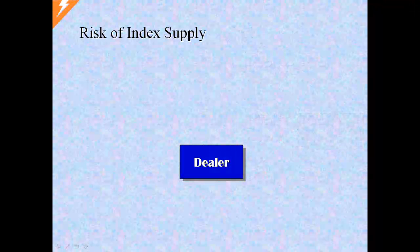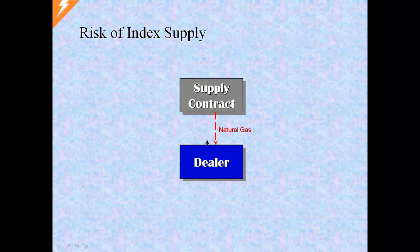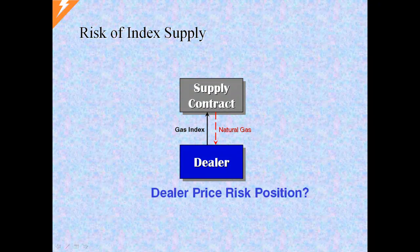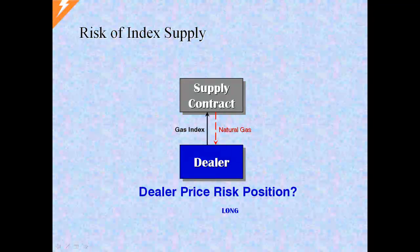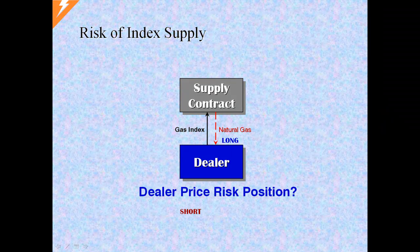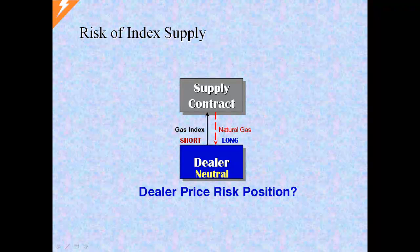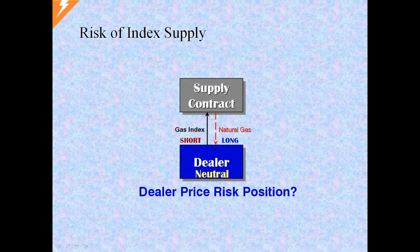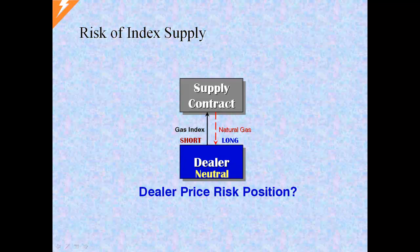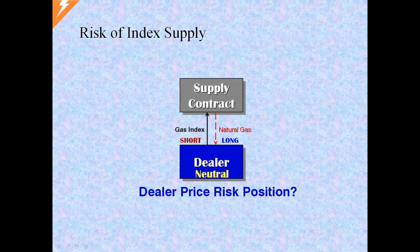An index supply contract has the same flows — the dealer will receive physical gas and pay gas index cash flow. Taking delivery of gas is a long position; paying gas index, as before, is a short position. So again, the overall position is neutral. A common question emerges: if prices rise, doesn't the dealer's cost of gas rise, and so wouldn't that make him short? The key is to realize that the dealer does not consume the gas. If prices rise, he can sell that gas at the higher price — no loss results. He is not at risk to prices.